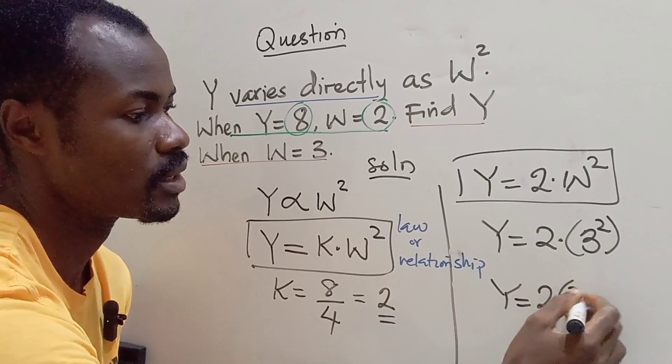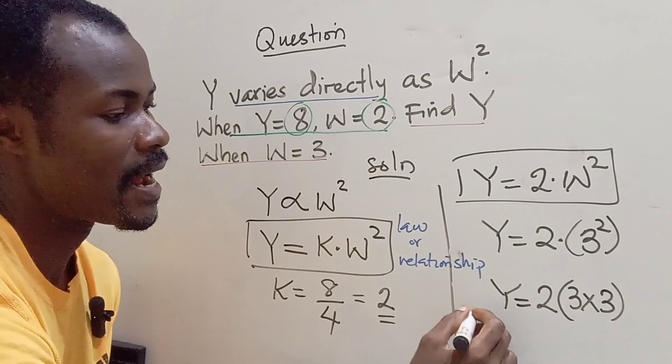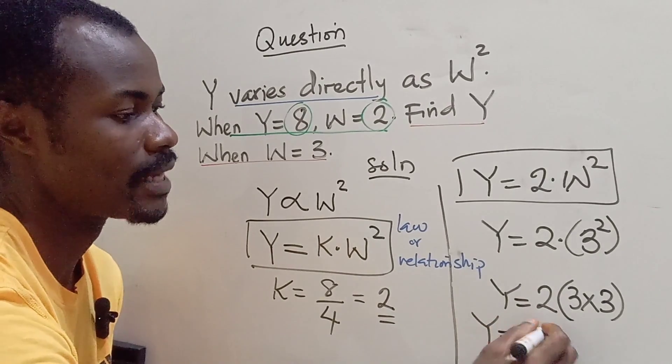Remember 3 squared means 3 times 3. So our Y equals 2 times 9.